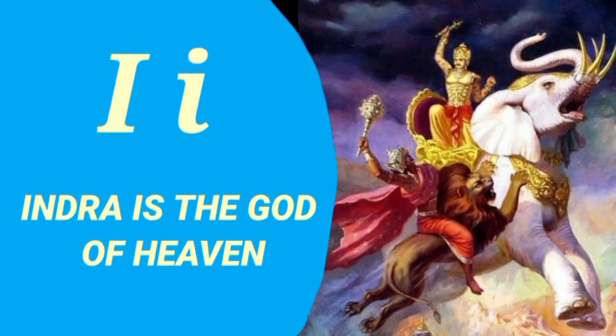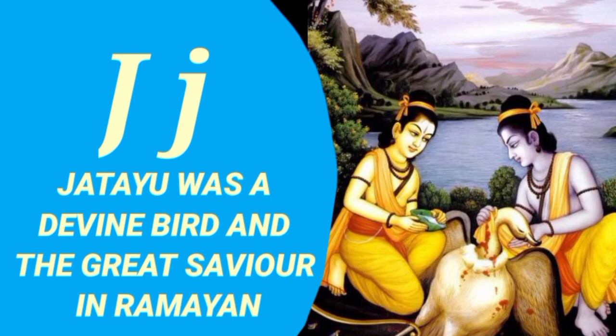I is for Indra, who is the god of heaven. J is for Jatayu, who was a divine bird and the great savior in Ramayana.